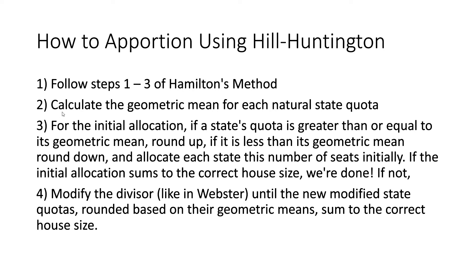Step two: calculate the geometric mean for each natural state quota. Step three: for the initial allocation, if a state's quota is greater than or equal to its geometric mean, round up. If it is less than its geometric mean, round down, and allocate each state this number of seats initially. If the initial allocation sums to the correct house size, we're done. If not, step four: modify the divisor the same way we do in Webster's method, until the new modified state quotas, rounded based on their geometric means, sum to the correct house size.